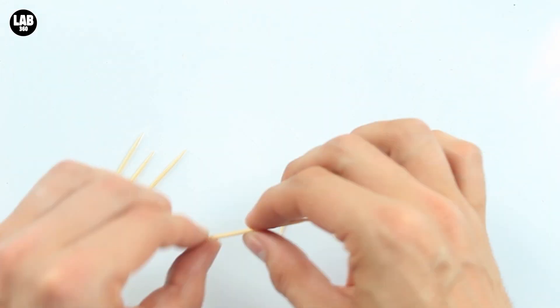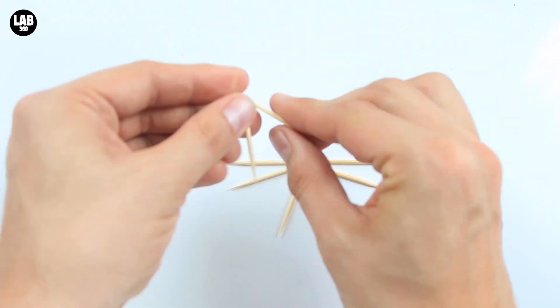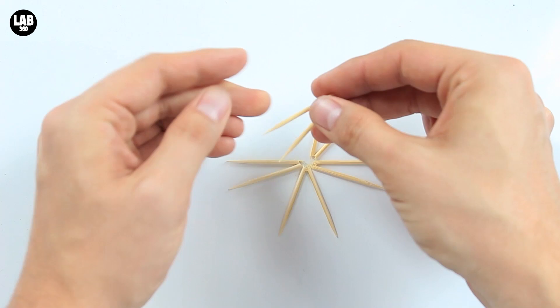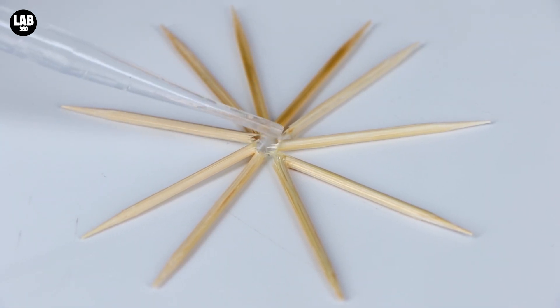Number nine. The moving star. Snap five toothpicks down the centre and arrange them like so. Then add a couple of drops of water to the centre. And you'll see that they move of their own free will.